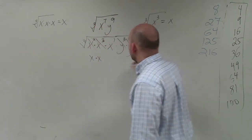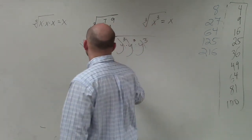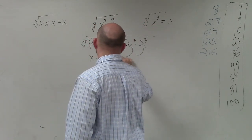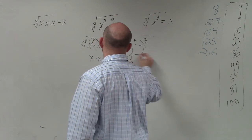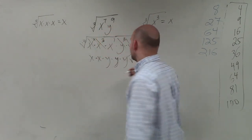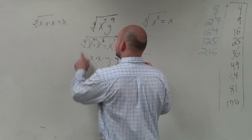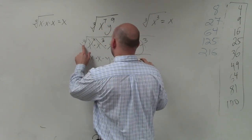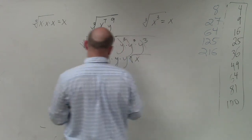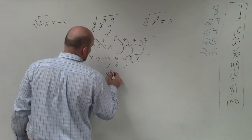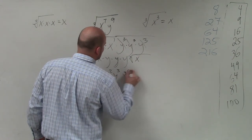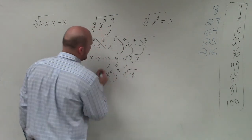That goes to y, y, y. So it's the cube root of x — x squared, y cubed, cube root of x is your final answer.